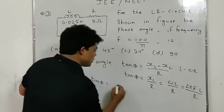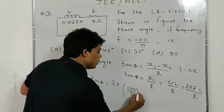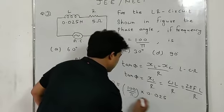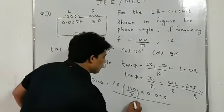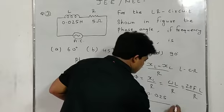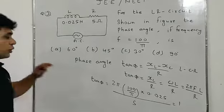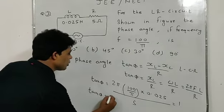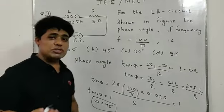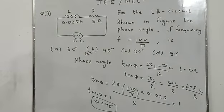We write tan φ = ωL / R = 2πfL / R. Substituting: f = 100/π, L = 0.025 henry, R = 5 ohm. The π's cancel: tan φ = (2 × 100 × 0.025) / 5 = 5/5 = 1. Since tan 45° = 1, φ = 45°. Option B is the correct answer.